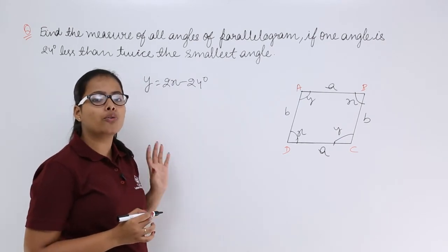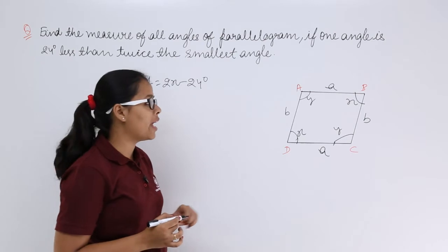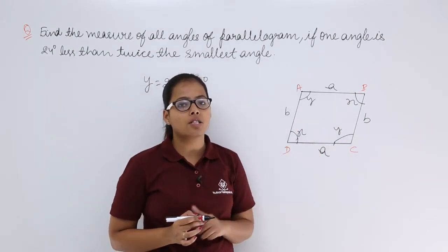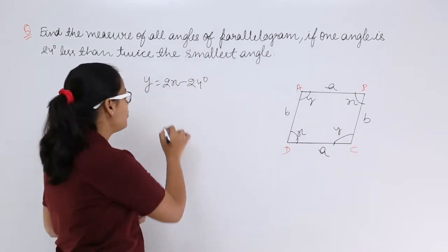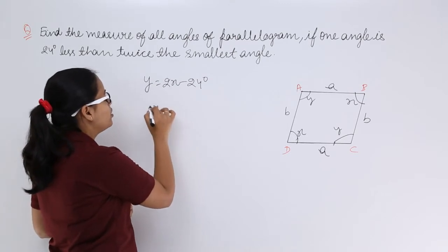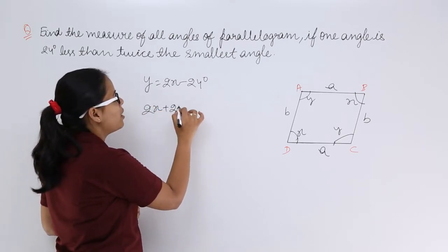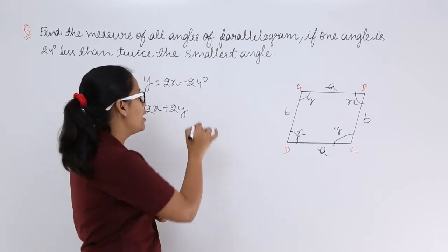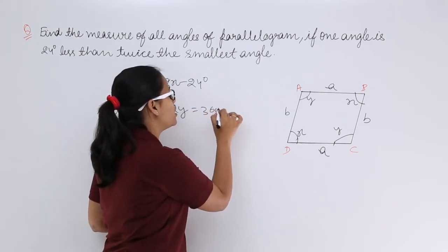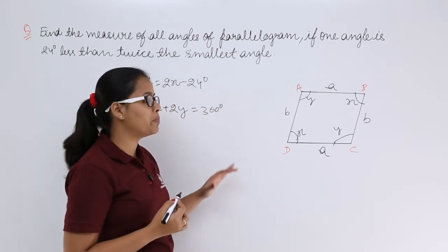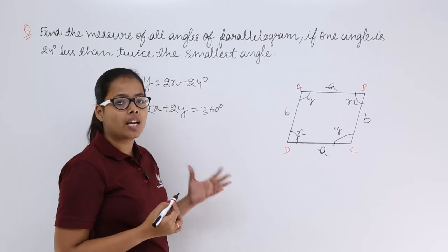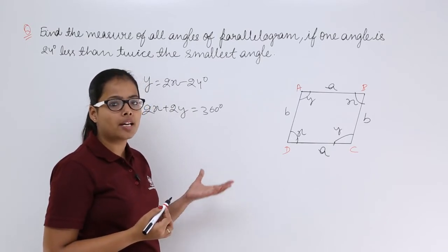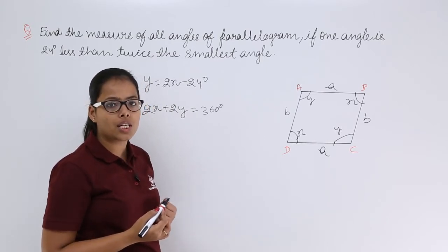To find the values of x and y, let's take the sum of all four angles of the parallelogram. This will be 2x + 2y, because there are two values of x and two values of y. We equate this with 360 degrees, since the sum of all four angles in a quadrilateral equals 360 degrees.